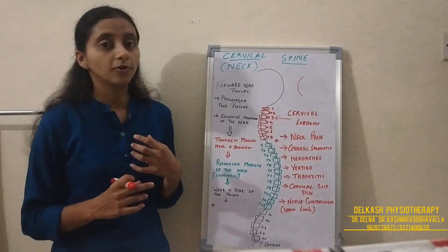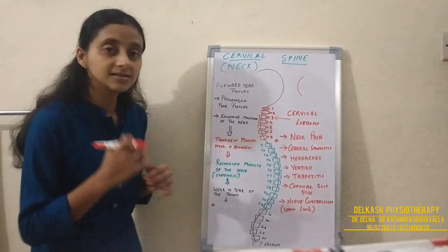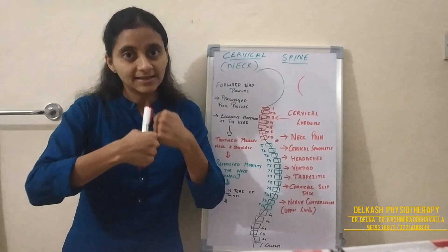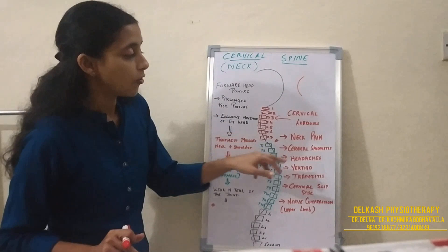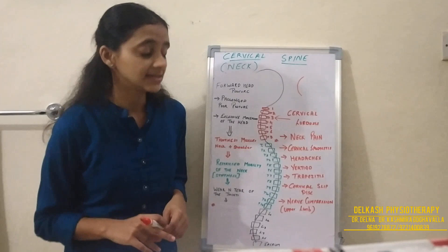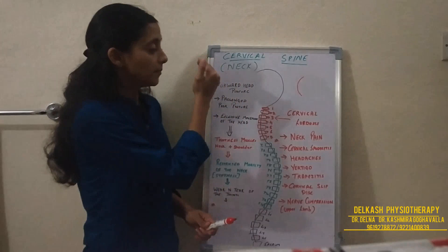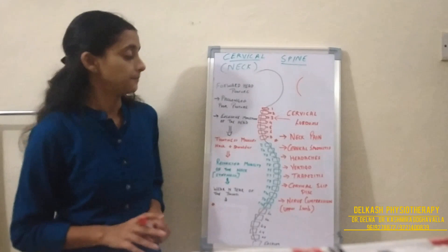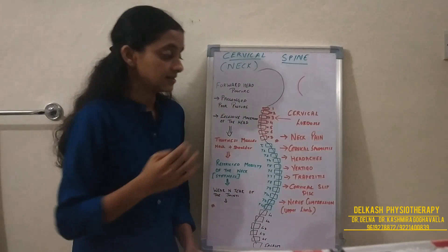Tight muscles restrict the normal mobility of your neck, and when you move your head on a stiff neck, that gives rise to wear and tear of the vertebral bodies. They start rubbing against each other and undergo degenerative changes, called cervical spondylitis. Many x-rays may report early degenerative changes or cervical spondylitis — this is basically wear and tear of the cervical joints due to poor posture and excessive movement, and it is extremely common, giving rise to pain in the neck region.